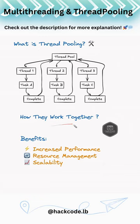So how do they work together? Multi-threading helps your computer do many things at once, while thread pooling efficiently manages threads by reusing them, saving resources.